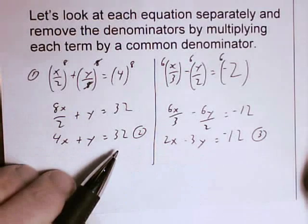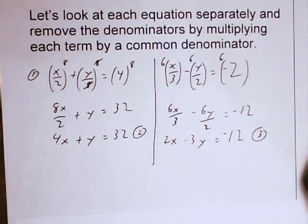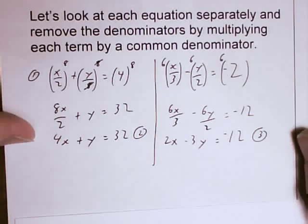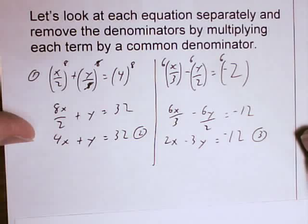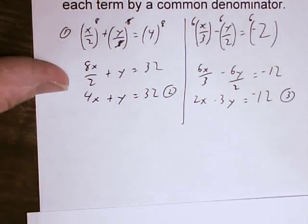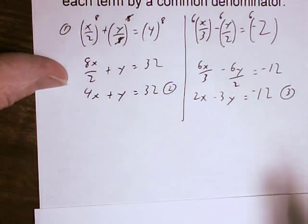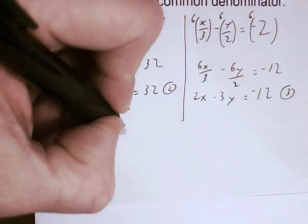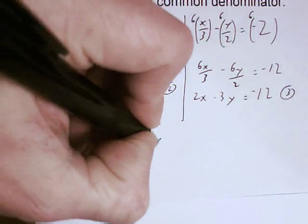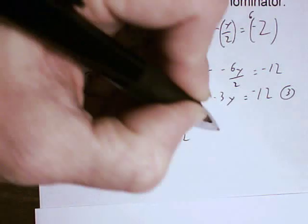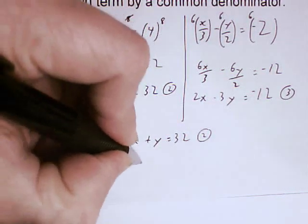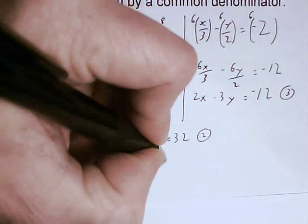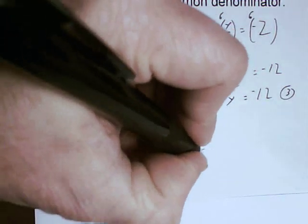These equations are equivalent to what I started out with. They've just been multiplied through to eliminate the fractions. Now I will go ahead and try to find a way to eliminate one of the variables. So I'm going to start off by writing both equations in the same form. 4x plus y equals 32. That's equation 2. 2x minus 3y equals negative 12. That's equation 3.